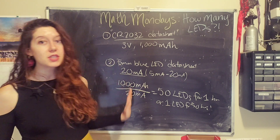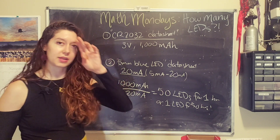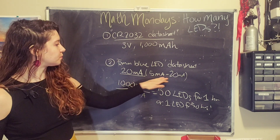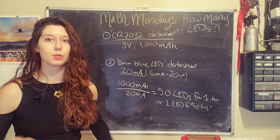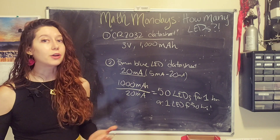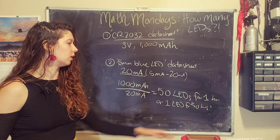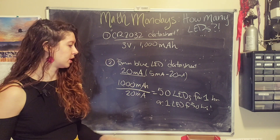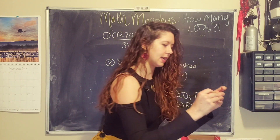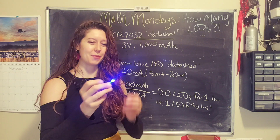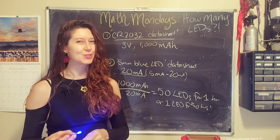So one coin cell can power 50 LEDs for 1 hour, or 1 LED for a little over 2 days. Note this is the theory — reality is way more complex. Your LED is probably not going to draw 20 milliamps. Also, if you have a circuit with wires, the wires are going to consume some of the energy from the battery as well. All in all, this is a reasonable approximation. You can attach a magnet to this, throw it somewhere, and it will be lit up for a little over two days!